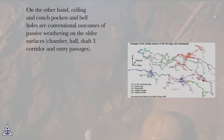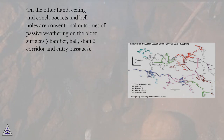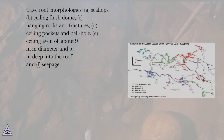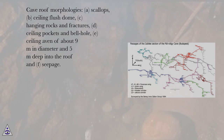On the other hand, ceiling and conch pockets and bell holes are conventional outcomes of passive weathering on the older surfaces — chamber, hall, shaft 3 corridor, and entry passages. Cave roof morphologies include: a) scallops, b) ceiling flush dome, c) hanging rocks and fractures, d) ceiling pockets and bell hole, e) ceiling aven of about 9 meters in diameter and 5 meters deep into the roof, and f) seepage.